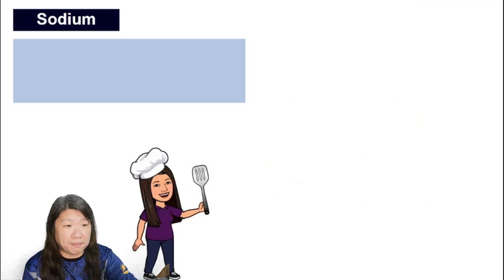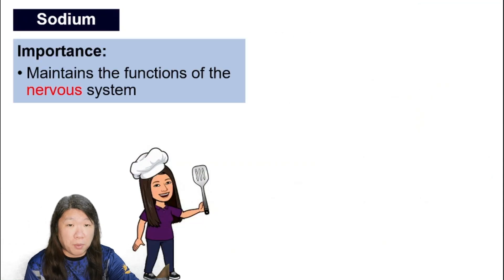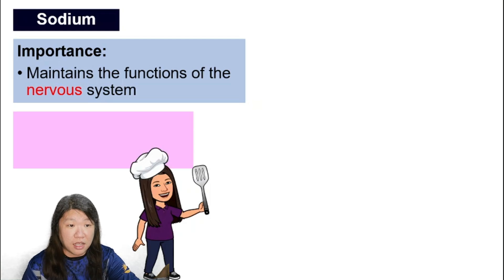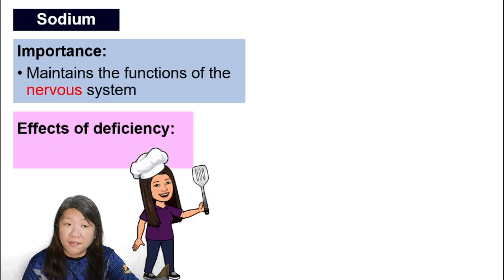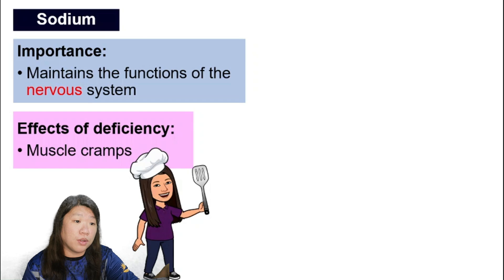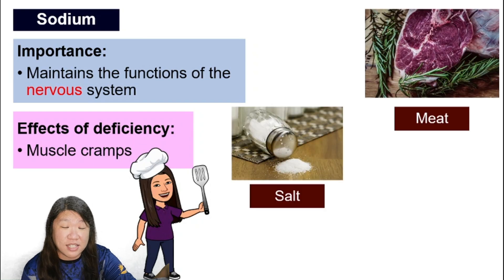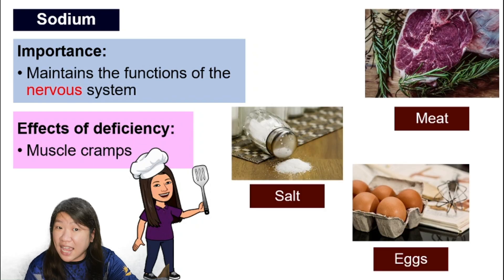Sodium is important for maintaining the function of the nervous system. Not having enough sodium can cause muscle cramp. We can get sodium from meat, salt, and egg.